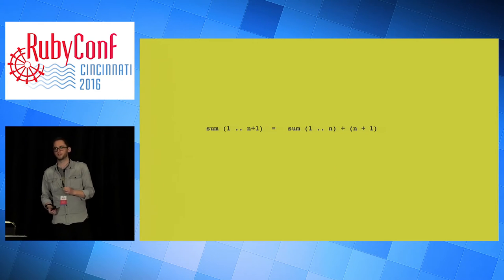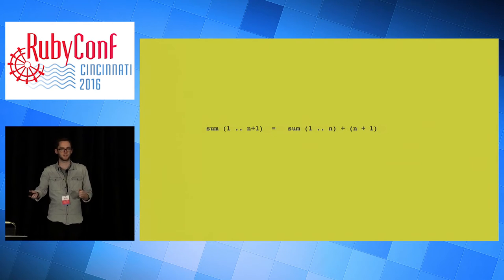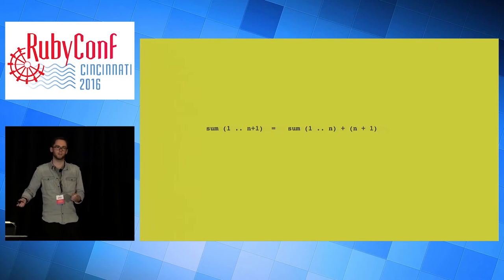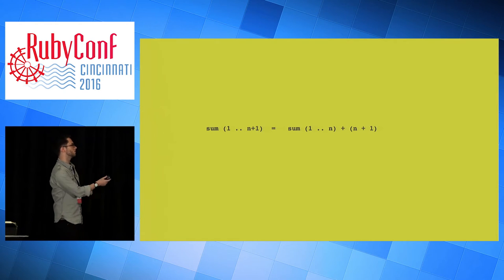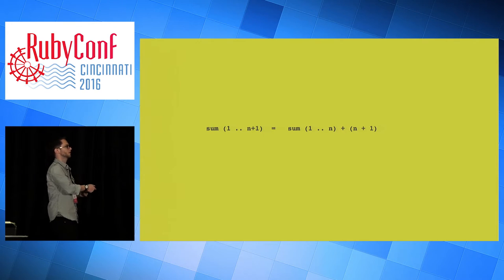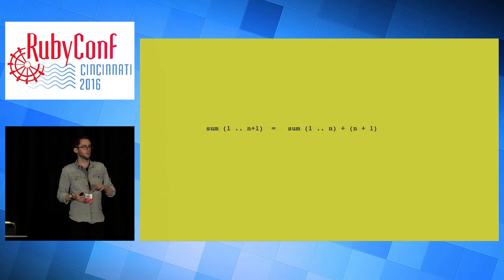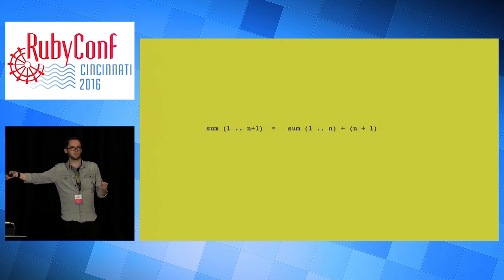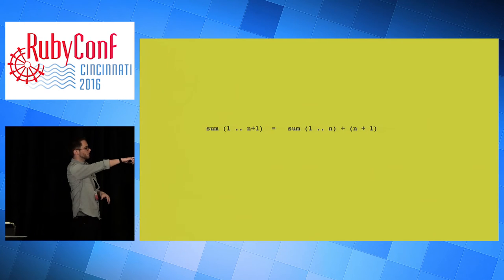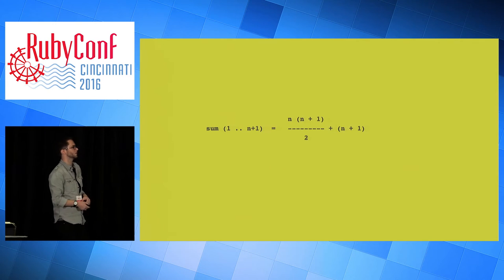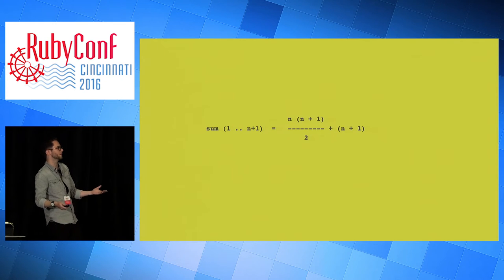You assume that the thing you want to prove is true in one case and you use that to prove that it's true in the next case. If it's true for n, you want to prove that it's also true for n+1, and you use the fact that it's true for n to do that. So by definition, the sum from 1 to n+1 is the sum from 1 to n, plus n+1 - you're just sticking the extra number on the end. We're going to assume the thing we're trying to prove is true, and for our sum from 1 to n, I'm going to substitute the expression that we believe it is.